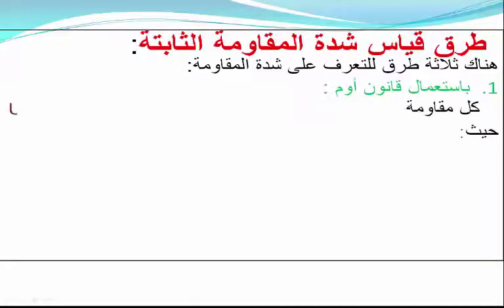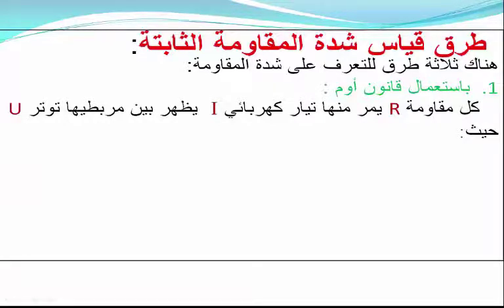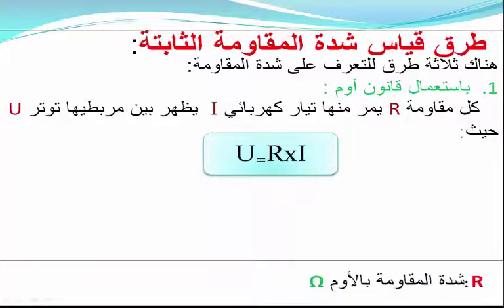سنتناول طرق قياس المقاومة. لدينا ثلاث طرق. الطريقة الأولى: قانون أوم - عندما تكون U هي الجهد وI هي شدة التيار، فإن: U = R × I، أي أن R = U / I.